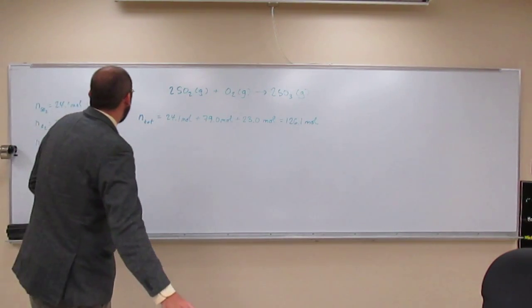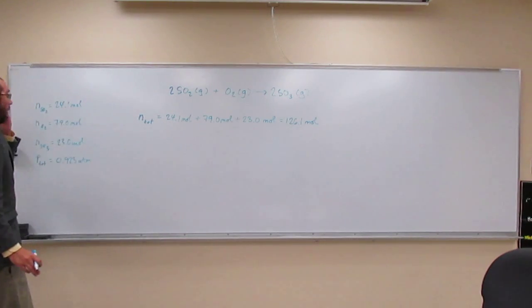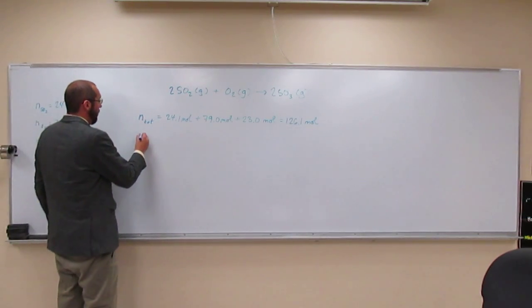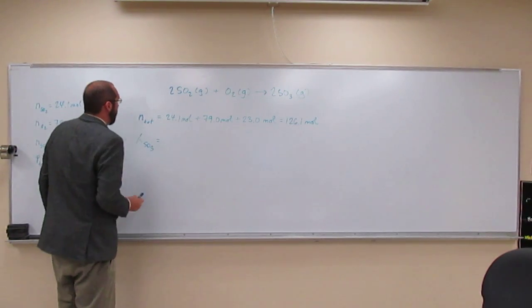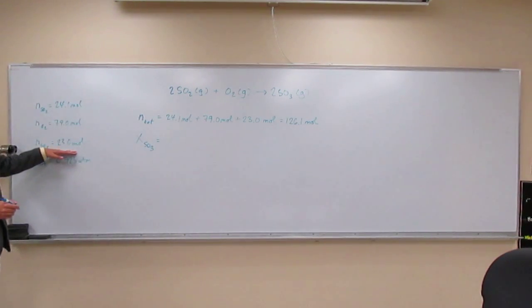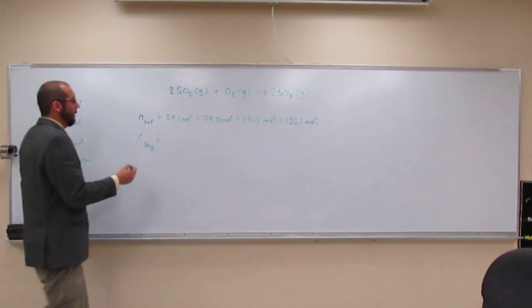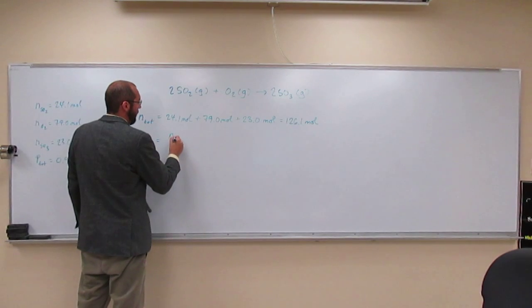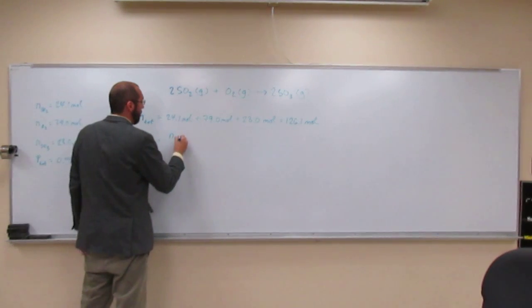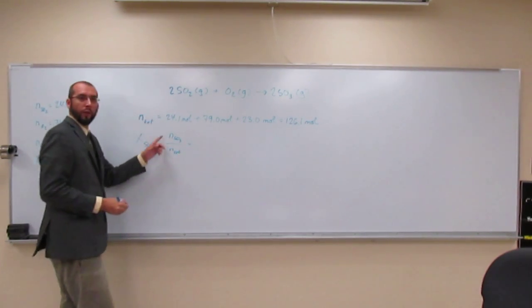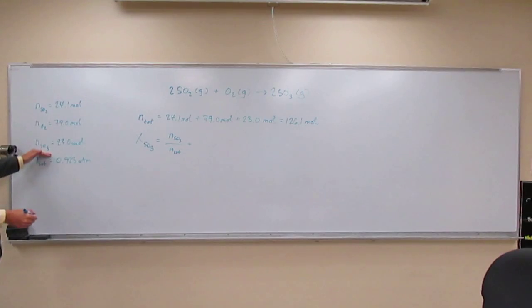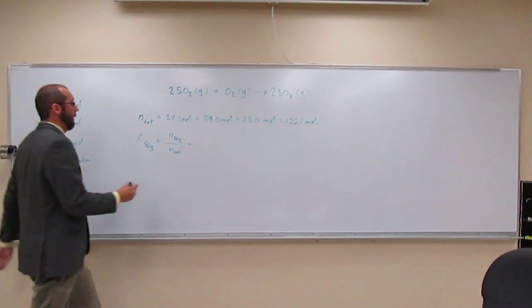Then it asks you, what's the mole fraction of sulfur trioxide? Mole fraction, big X, sulfur trioxide. We know the number of moles of sulfur trioxide, and we know the total number of moles. Remember, the mole fraction is just the number of moles of a part divided by the total number of moles. We have both of those.